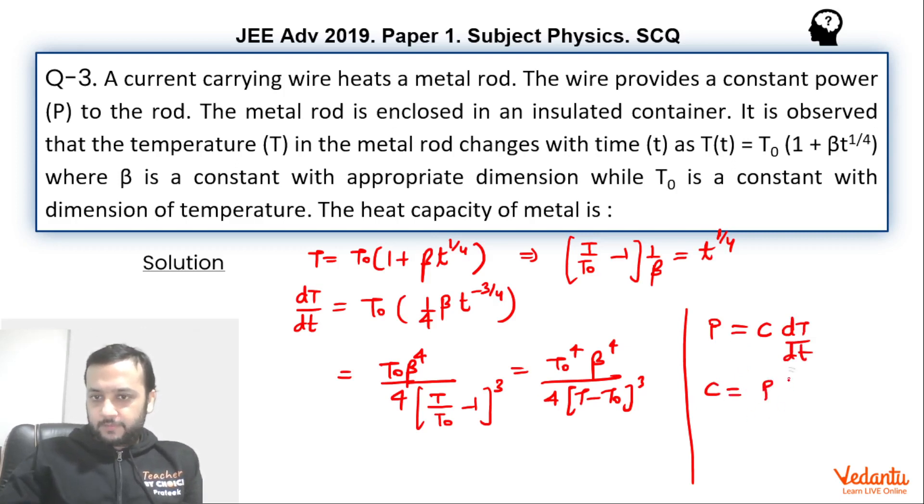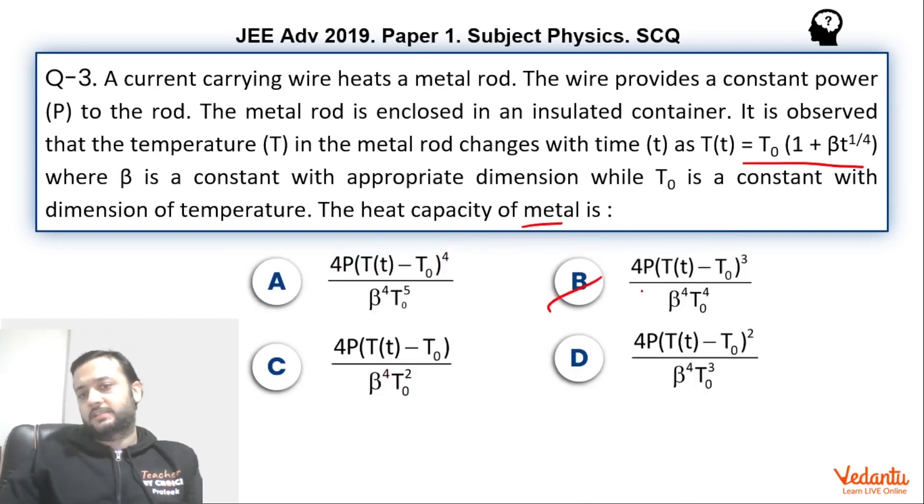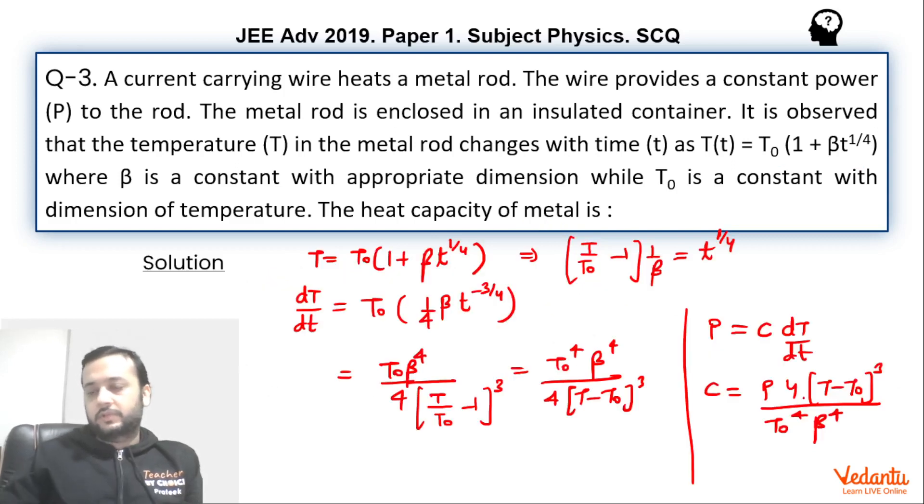So this becomes power into 4, 4 into T minus T₀ whole cube, divided by T₀ to the power 4 into beta to the power 4. So this is our answer, option B matches: 4P into temperature minus T₀ whole cube, which is over here, upon T₀ to the power 4 and beta to the power 4.